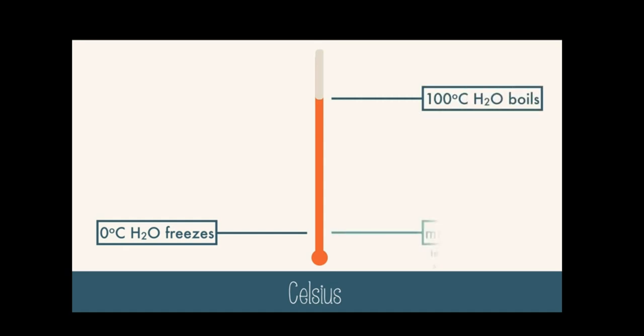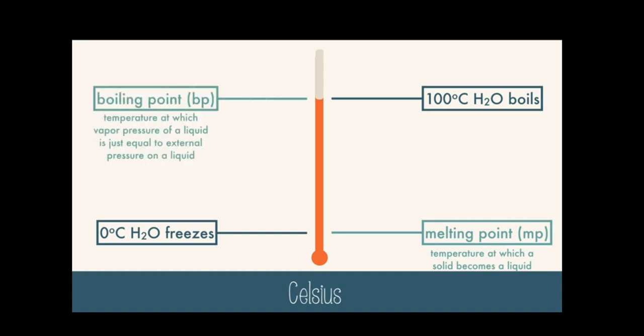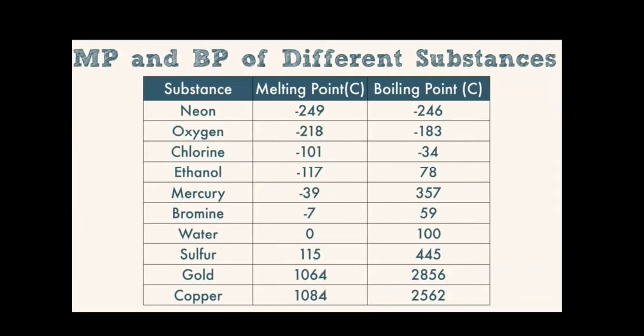The temperature at which a solid becomes a liquid is the melting point. Using a chart like this, you can figure out what temperature you need to be to get a solid, liquid, or gas phase of the substance you're using.